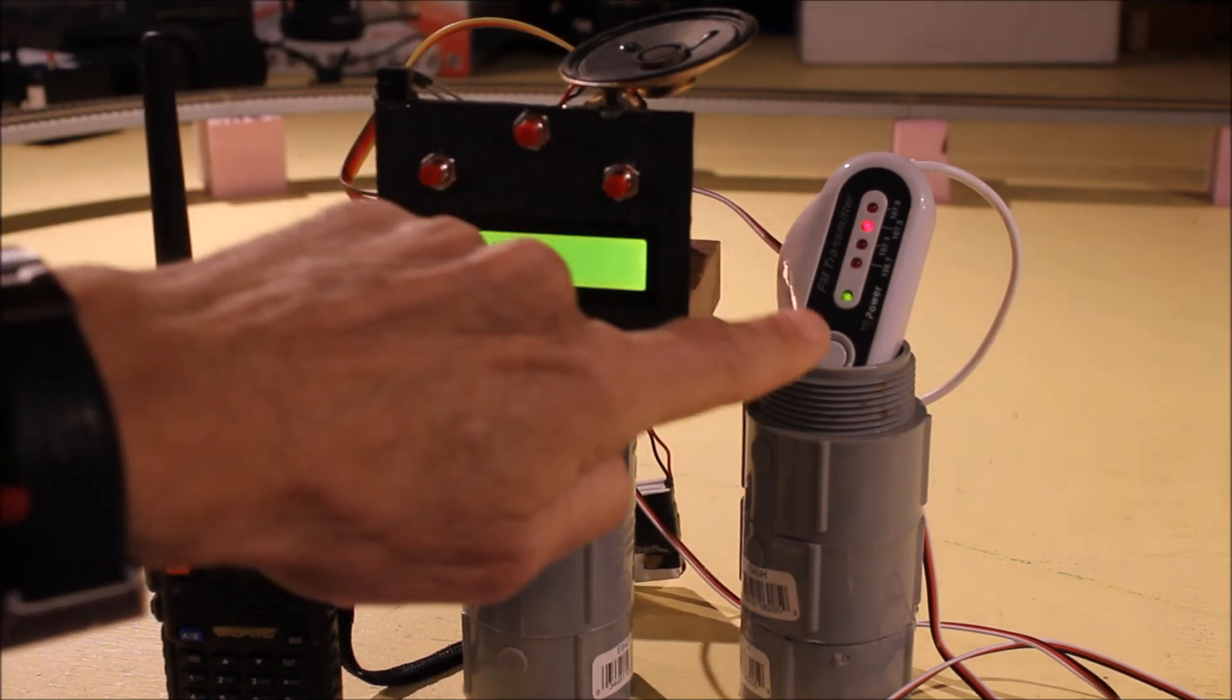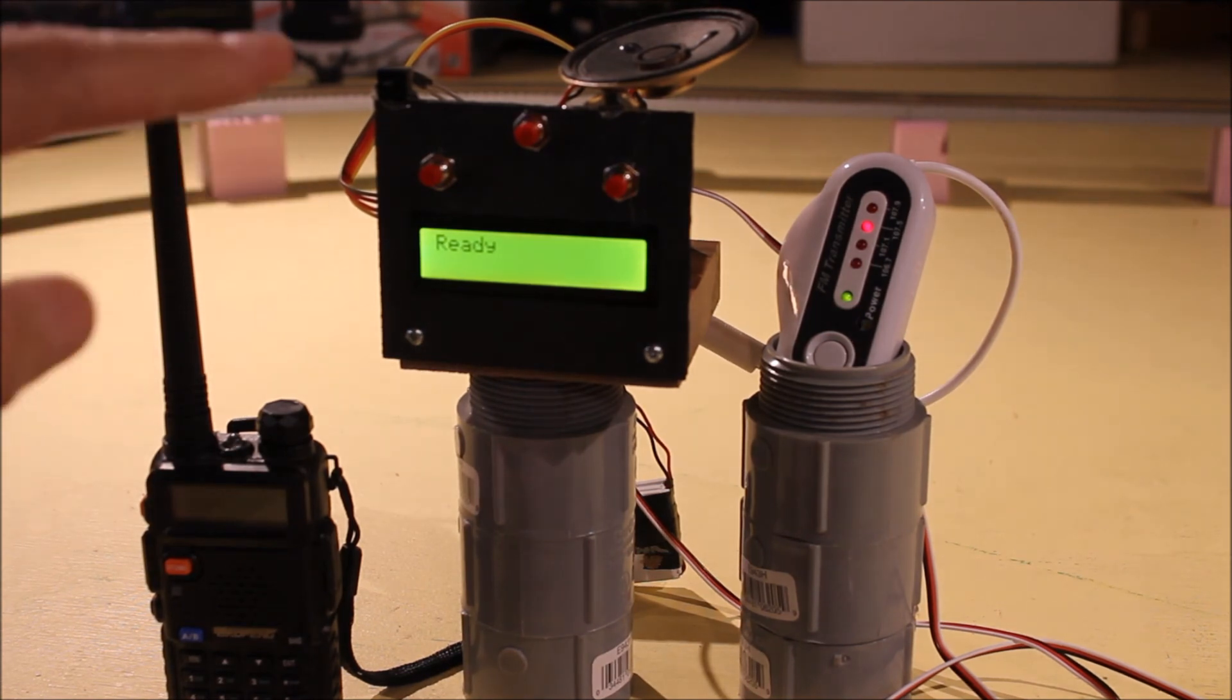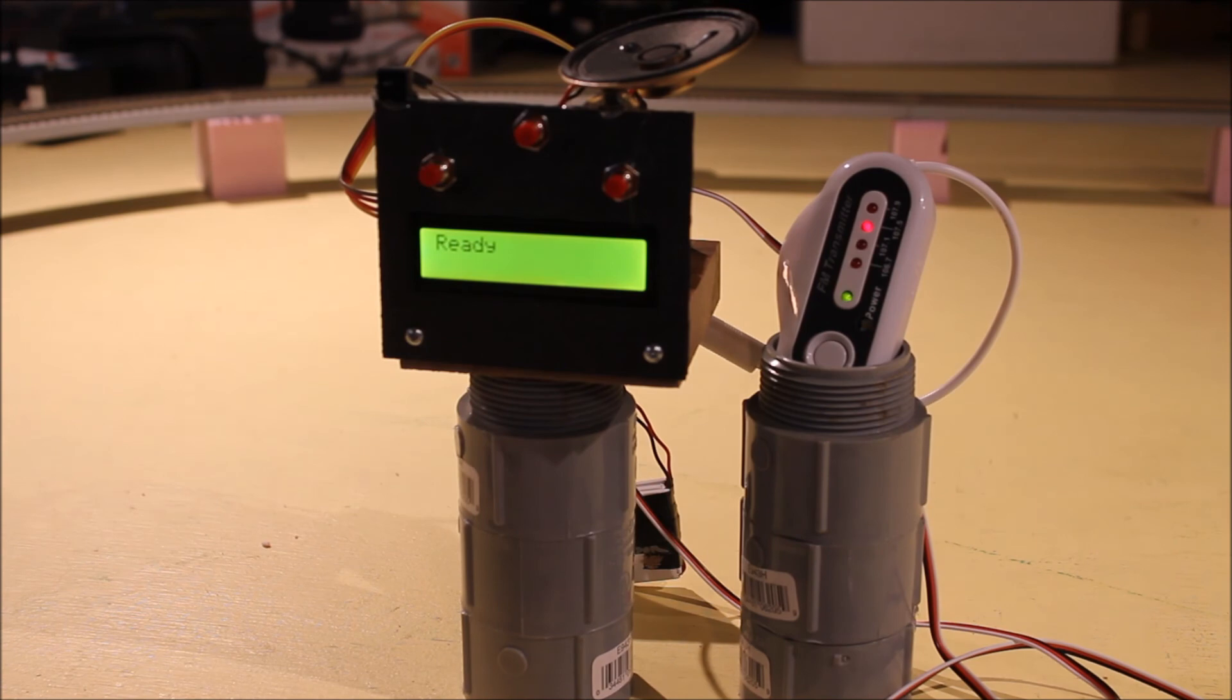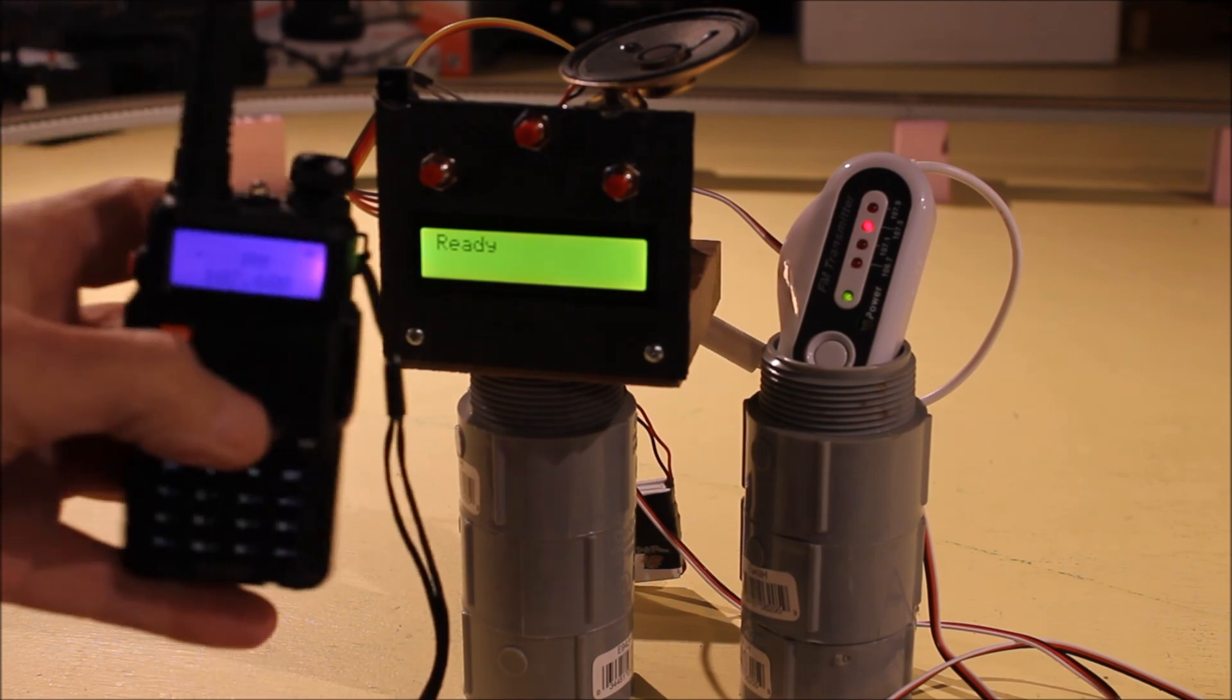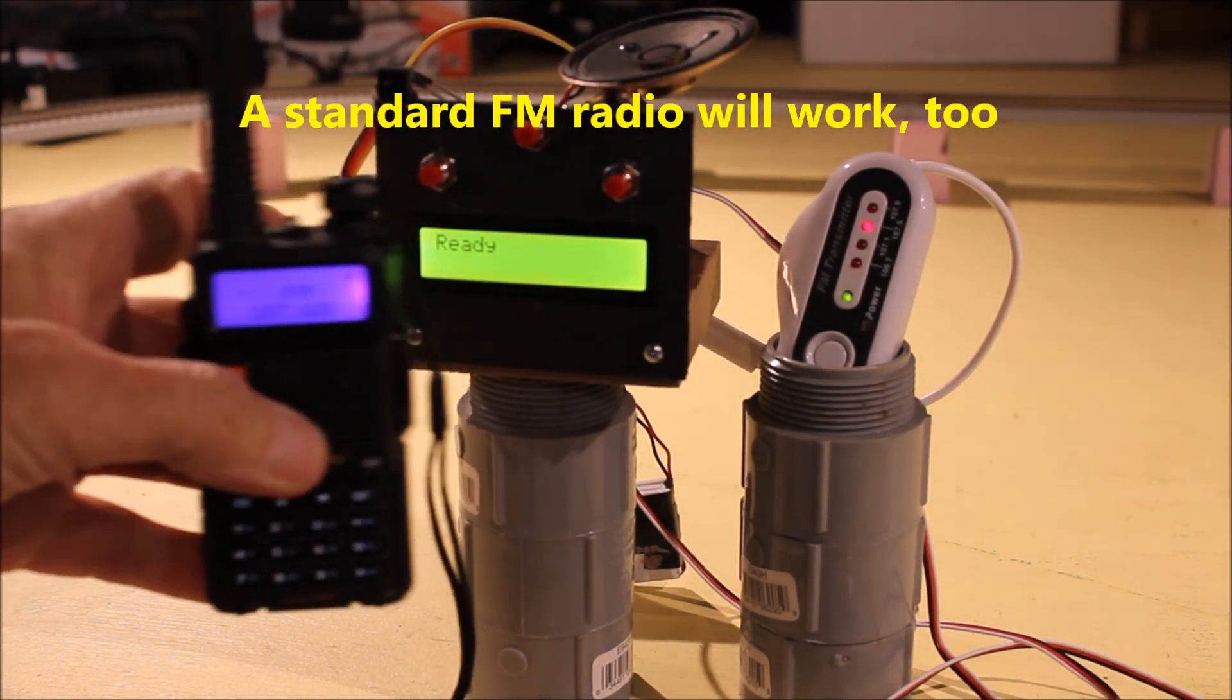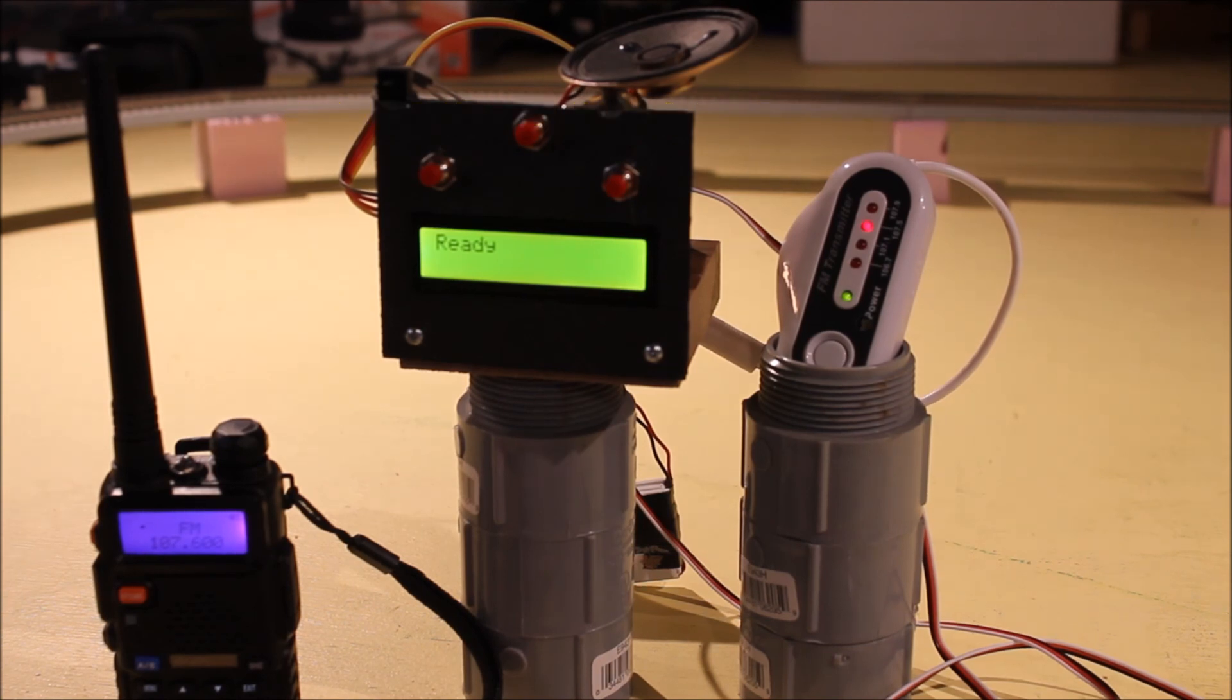You'll also notice the FM transmitter that's over on the right. That's actually connected to the sound card and it's going to transmit the audio to this scanner that's set to receive on the FM broadcast band, so that when we break the beams and start the system going it will report over that.